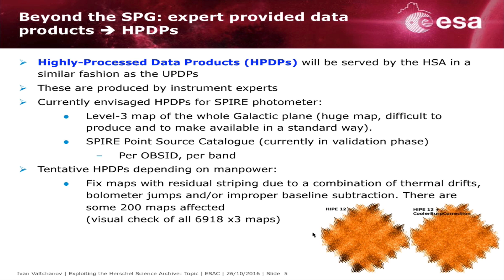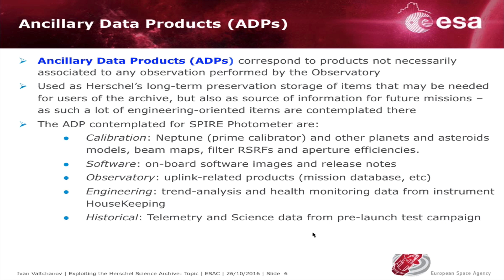In the next session I will show one example of this. We also have ancillary data products, which are not necessarily associated with an observation. They are for preservation storage of items needed by users of Spire data, but they can also contain information about future emission, health monitoring, or engineering-oriented items.